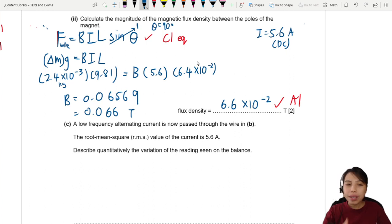a low frequency alternating current is now passed through the wire. The root mean square value of the current is 5.6. Hey, that's our 5.6. But now it's RMS. This is current RMS.